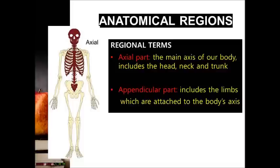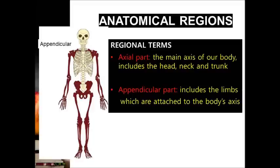Now we move to anatomical regions. In regional terms, we can divide into axial part and appendicular part. For the axial part, it covers the main axis of the body from head, neck, and trunk. Meanwhile, both upper and lower limbs are the appendicular part.